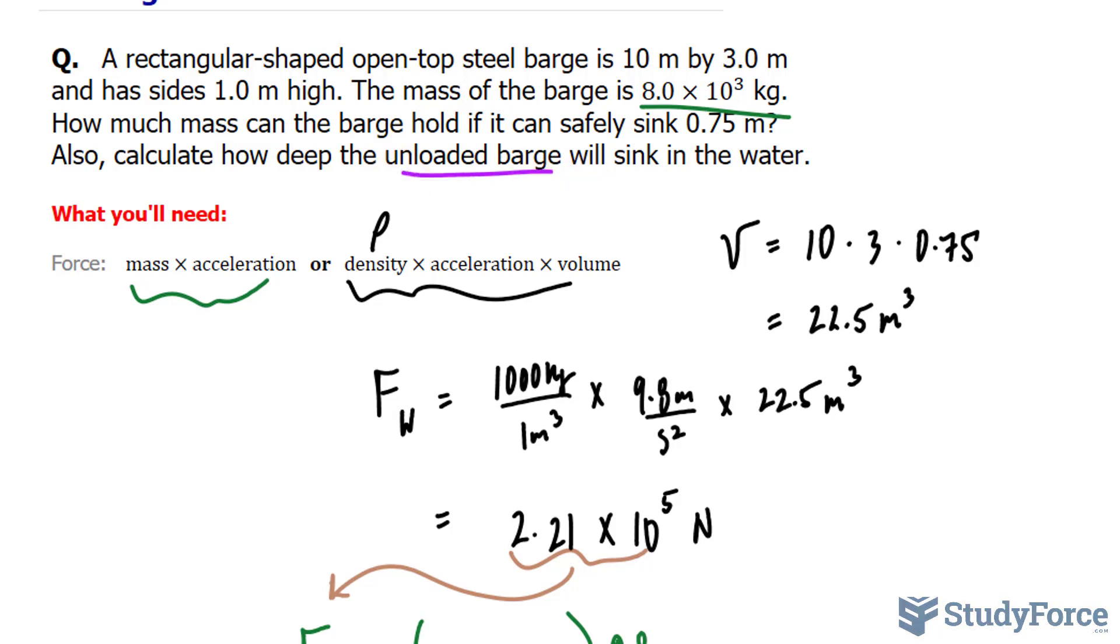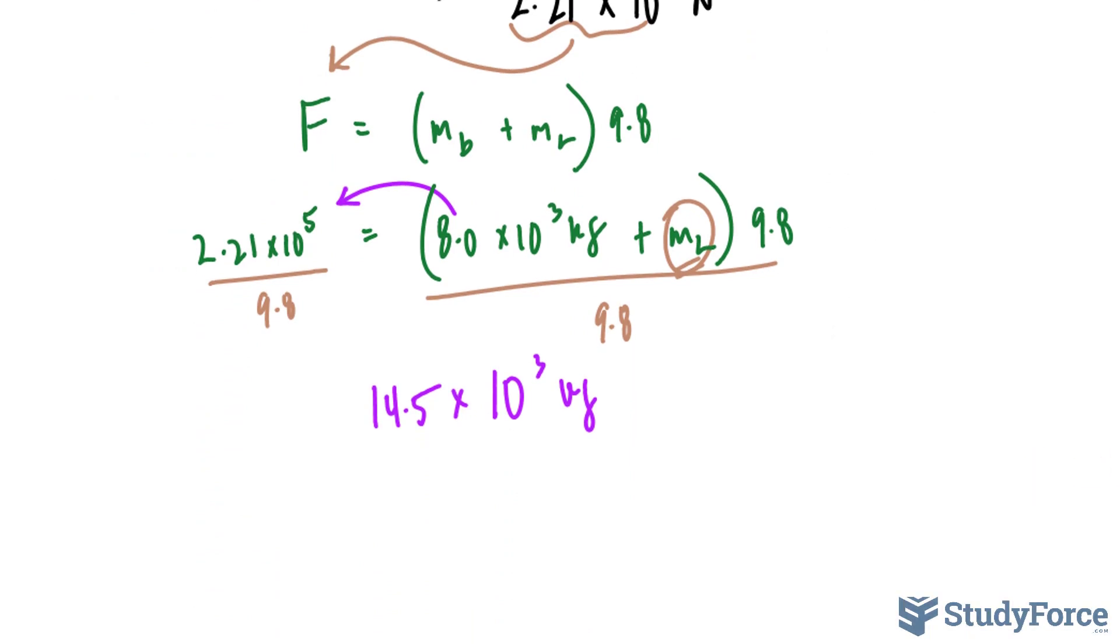For that, we have to work backwards. So we would calculate the force, where we take 8.0 × 10³ times 9.8 to get the force that the barge exerts without any load.